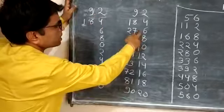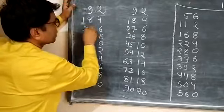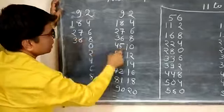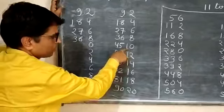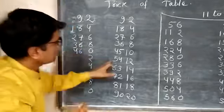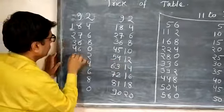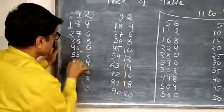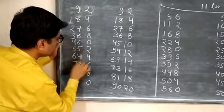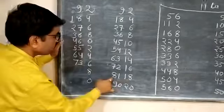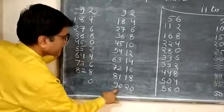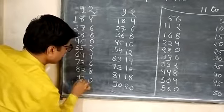Here also 10 place nothing, so we will write as it is: 27. Here also 10 place nothing, so as it is: 36. Here 10 place 1 is there, 1 plus 45 you will get 46. Similar way here: 55. Similar way here 63 plus 1 you will get 64. Here 72 plus 1 you will get 73. Here 81 plus 1 you will get 82. And here 90 plus 2 you will get 92.